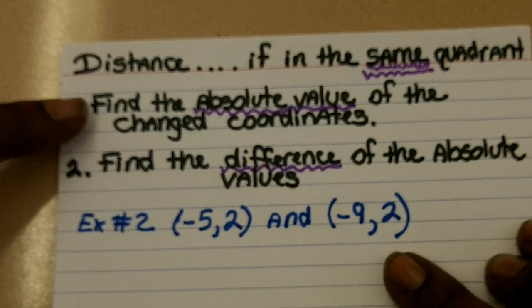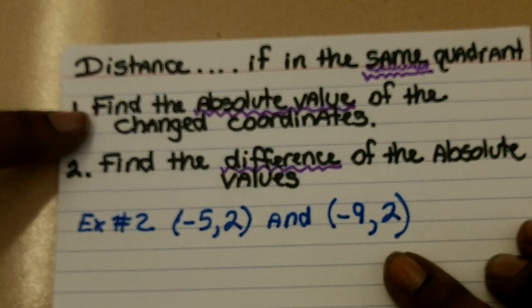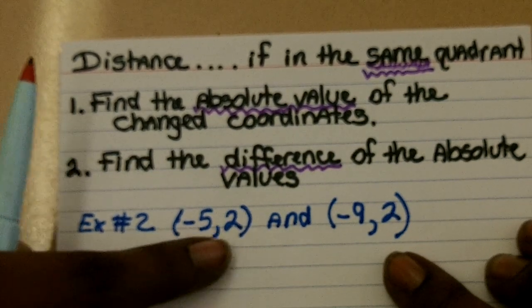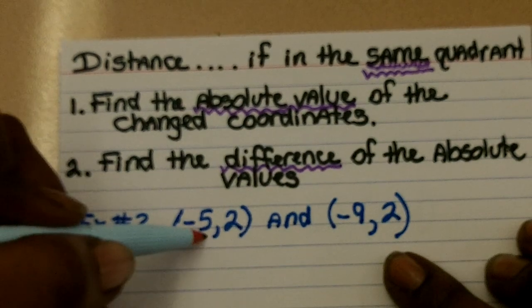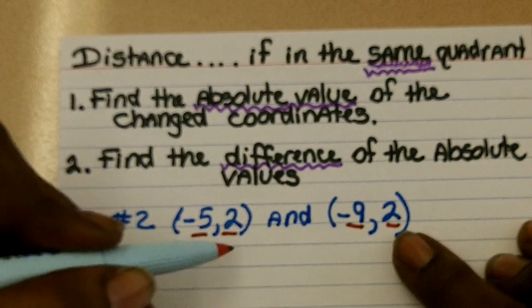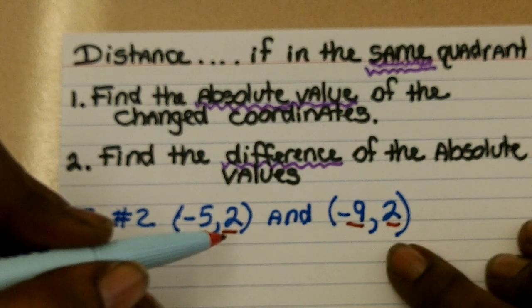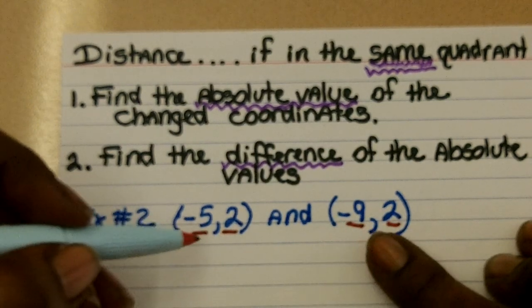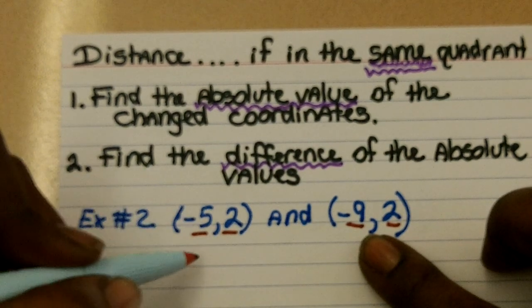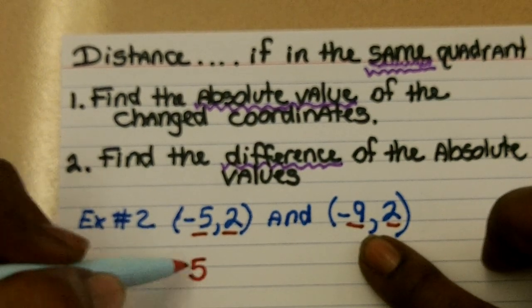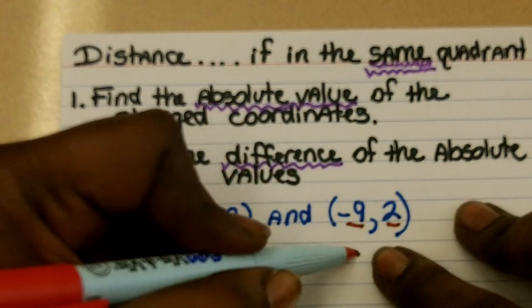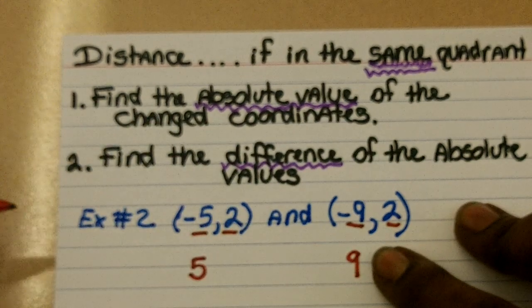Step number one would be to find the absolute value of the changed coordinates. So we have two coordinates, the x and the y. Looking at both the x and the y in both sets of ordered pairs, it appears that the y coordinate stays the same. However, the x changes, so we're going to focus our attention on the x coordinate. Negative 5, which has an absolute value of 5. Negative 9, which has an absolute value of 9. So that would be step one.